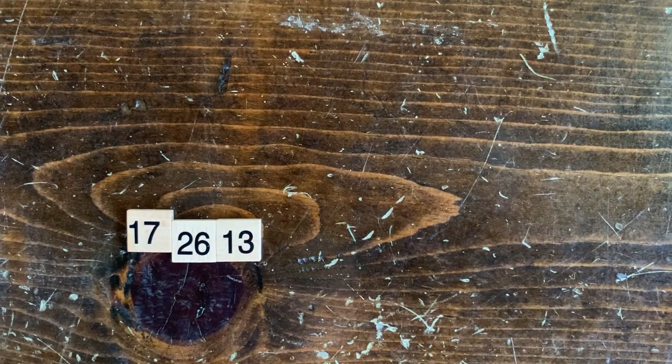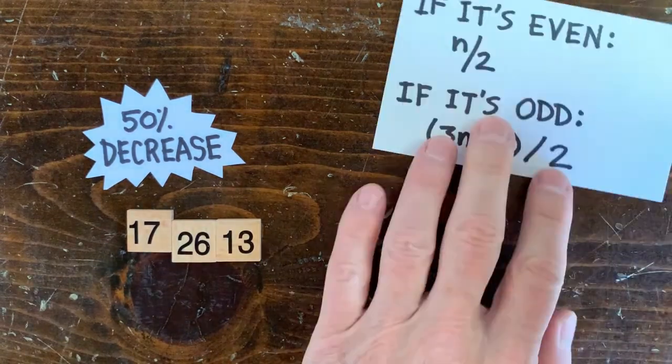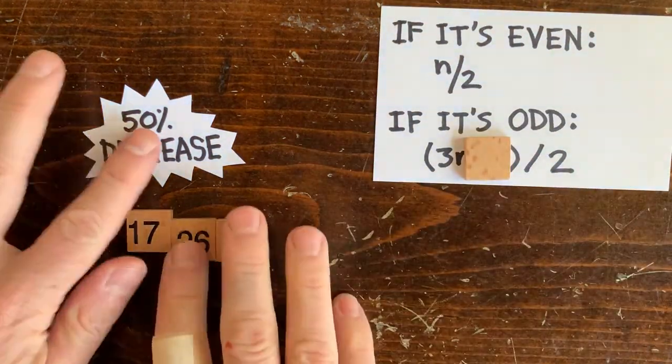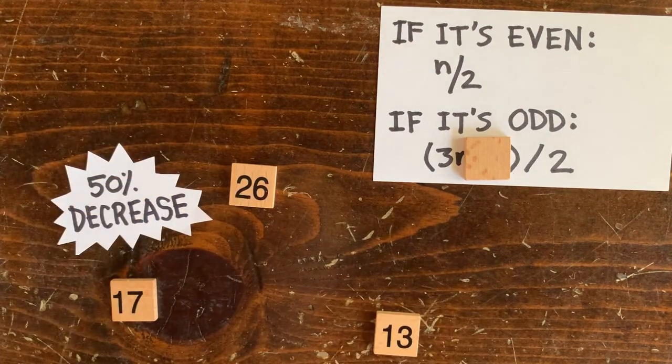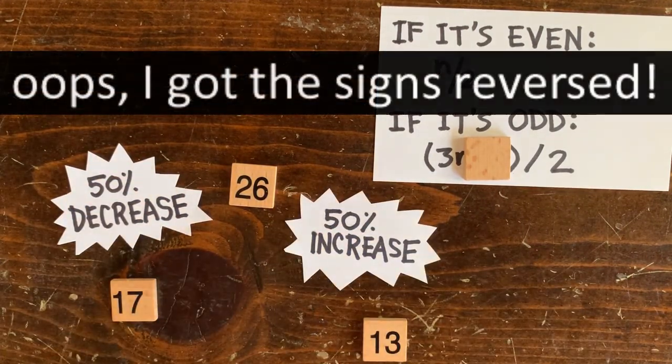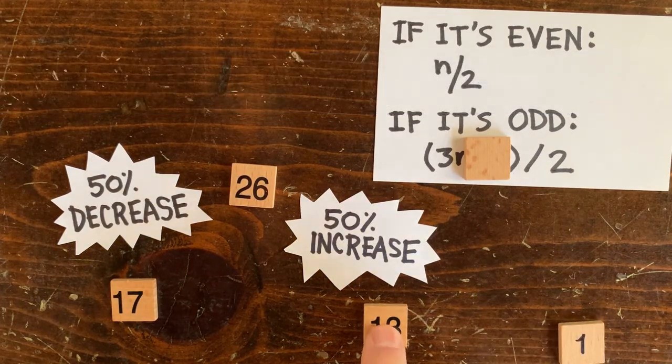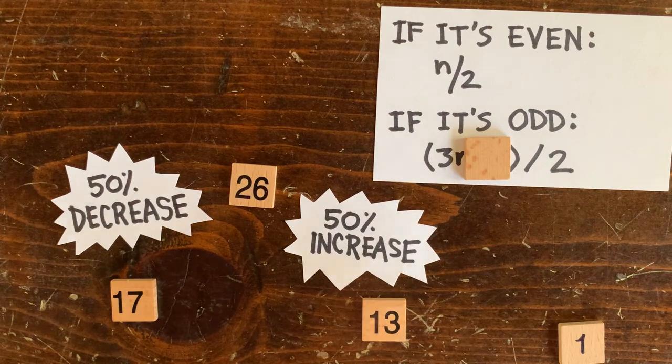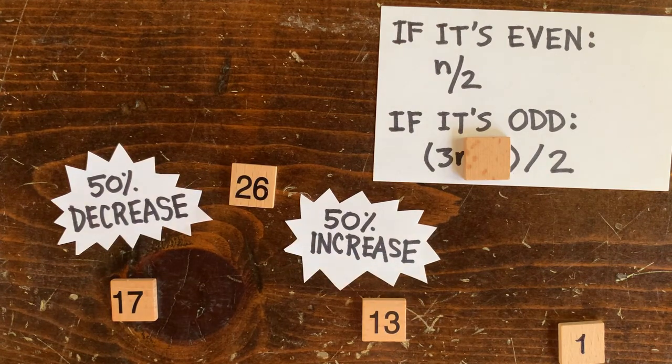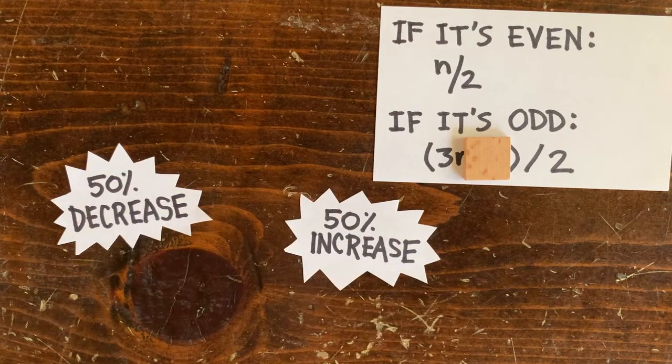Well, when a number's odd, we increase it by about 3 halves, or 50 percent, if we ignore the little plus 1. When it's even, we decrease it by 50 percent. We notice that an increase followed by a decrease results in a smaller number, like when we start with 17 and then wind up with 13. That's why 3n plus 1 sequences tend to march downwards, and every number that's ever been tried ultimately reaches 1.